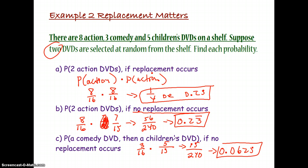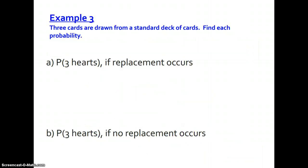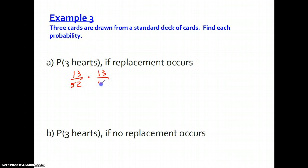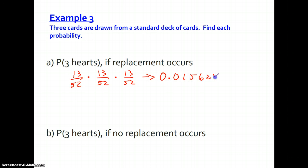Next: 3 cards are drawn from a standard deck. Find the probability of 3 hearts if replacement occurs. We choose a heart, put it back, choose another, put it back, then choose again. There are 13 hearts out of 52 cards, so 1/4 each time. If replacement occurs, the probability is 13/52 times 13/52 times 13/52. That gives a probability of 0.015625. Since this decimal terminates, we write the entire value.